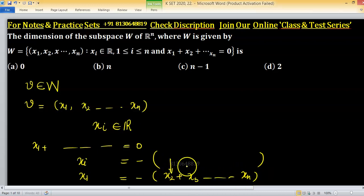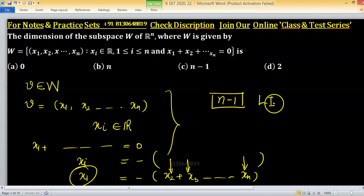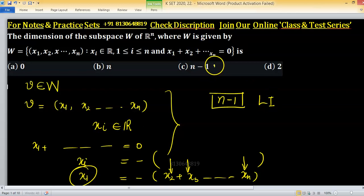So we are independent at these choices x2, x3 and so on up to xn. Because total are n and 1 is dependent, x1 is dependent. So n minus 1 are linearly independent choices we have. So option c will be right to one.